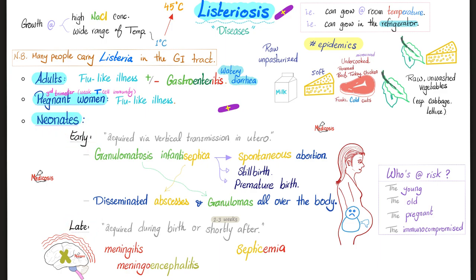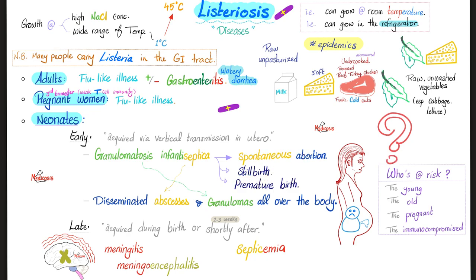For neonates, there is early disease and late disease. Early disease is acquired via vertical transmission in utero before birth, and this can lead to granulomatosis infantiseptica — tons of granulomas, sepsis, and abscesses all over the body of the embryo or fetus — which can lead to miscarriages, stillbirth, and premature birth. I want you to comment below: what's the difference between spontaneous abortion and stillbirth? Late neonatal listeriosis is acquired during birth or shortly after — two to three weeks after delivery.